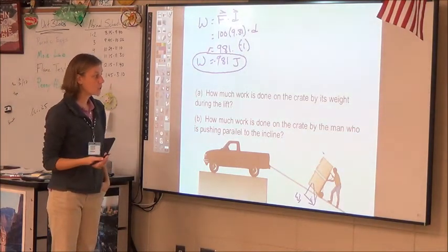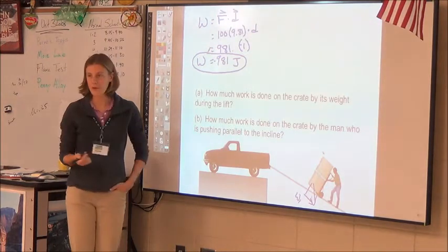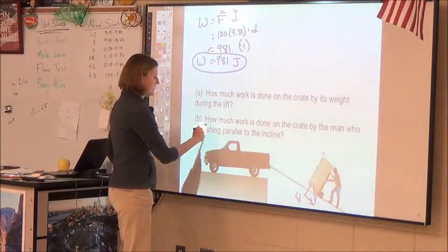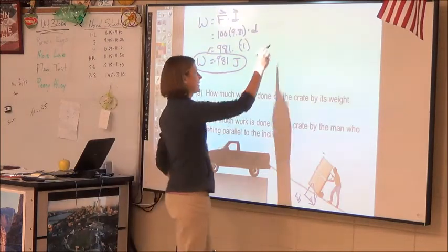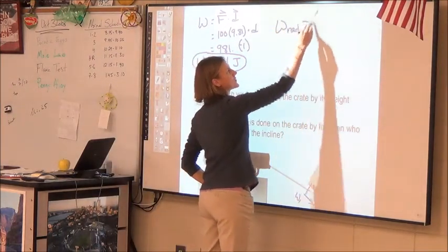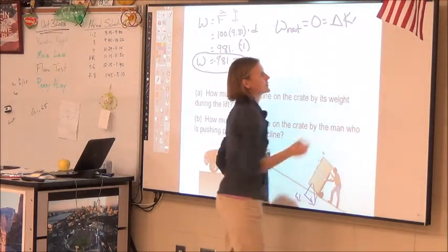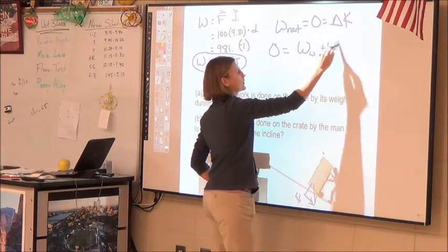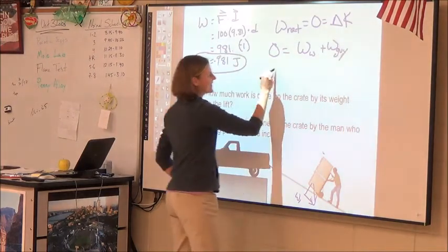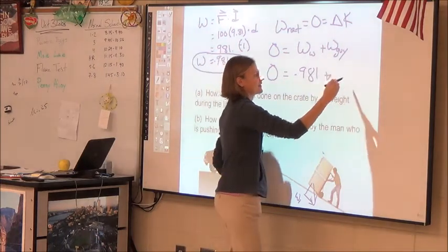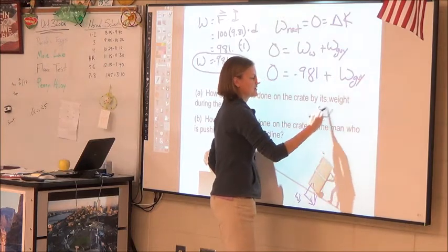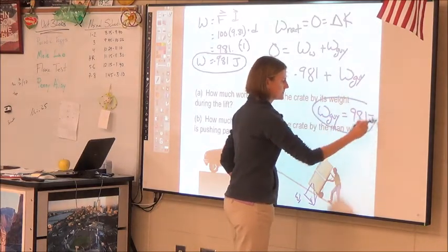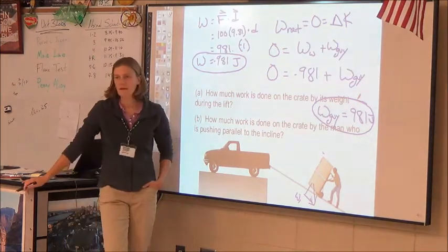That sort of makes sense because the force of gravity isn't helping move that way. It's going to be negative work done. But we know that the work done was 0. So where is the other work coming from? The man. So how much work is done on the crate by the man? It's got to be the same thing. We know work net equals 0 because change in kinetic energy equals 0. Equals work weight plus work guy. So you know it's the same value but opposite sign.